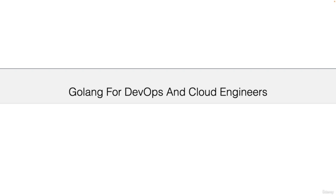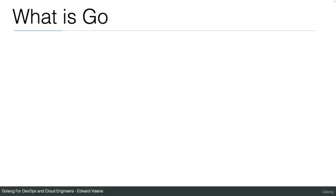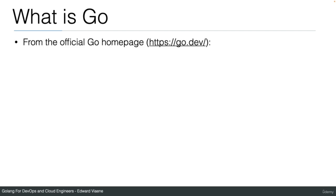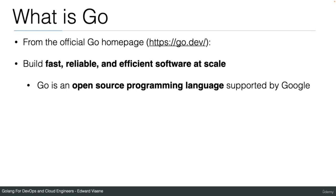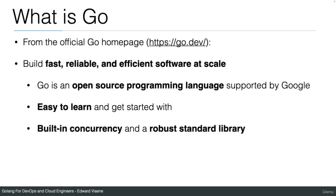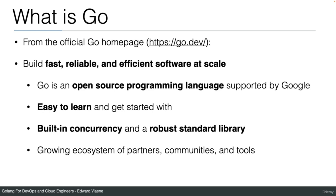Welcome to my Golang for DevOps and Cloud Engineers course. What is Go or Golang? From the official Go homepage, go.dev: Build fast, reliable, and efficient software at scale. Go is an open source programming language supported by Google. It's easy to learn and to get started with. It has built-in concurrency and a robust standard library, and a growing ecosystem of partners, communities, and tools.